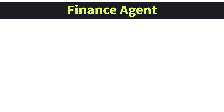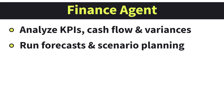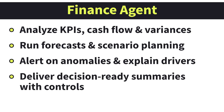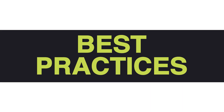As a quick summary, the finance AI agent can: analyze financials and surface insights on KPIs, cash flow trends, and variances against plan; run forecasts and scenario planning to test assumptions and see projected impact; alert on deviations from plans or anomalies and explain contributing drivers; feed decision-ready summaries into the business feed with accept and dismiss controls; and work alongside your other QuickBooks AI agents for a connected view. As a best practice, treat AI suggestions as decision support — review explanations, verify mappings, and keep the chart of accounts clean for the best signals.